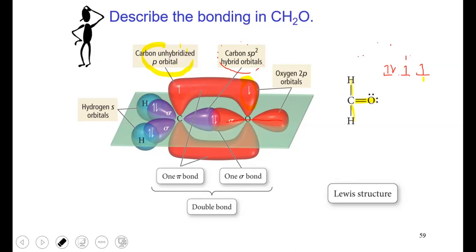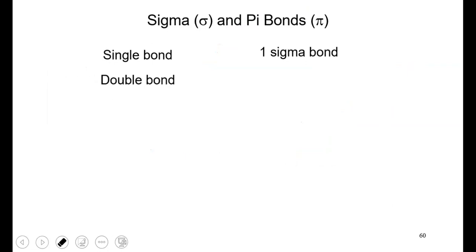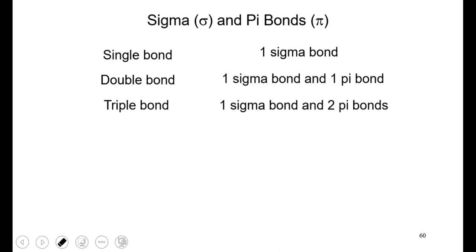To summarize: a single bond consists of one sigma bond — electrons shared right between the atoms. A double bond consists of one sigma bond and one pi bond — electrons shared above and below the axis. A triple bond consists of one sigma bond and two pi bonds.